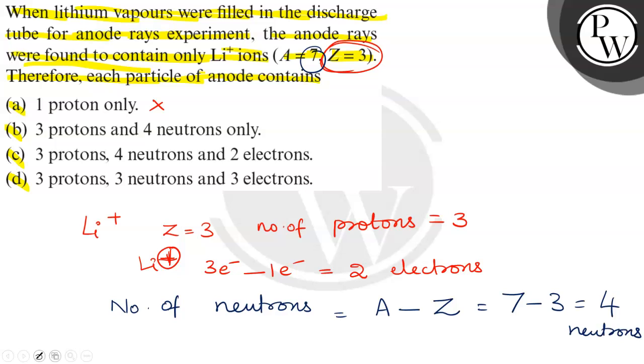Let us select the option. Which option is correct? Check it. Option C: 3 protons, 4 neutrons, and 2 electrons. So option C is correct.